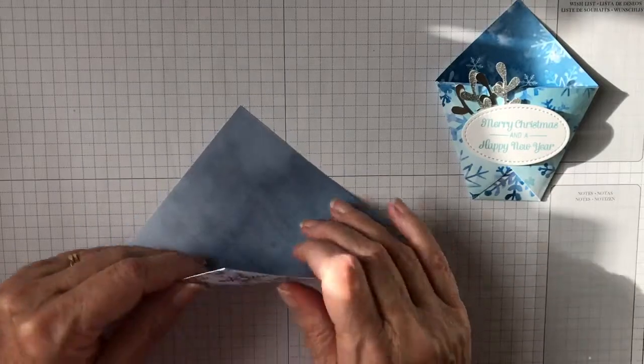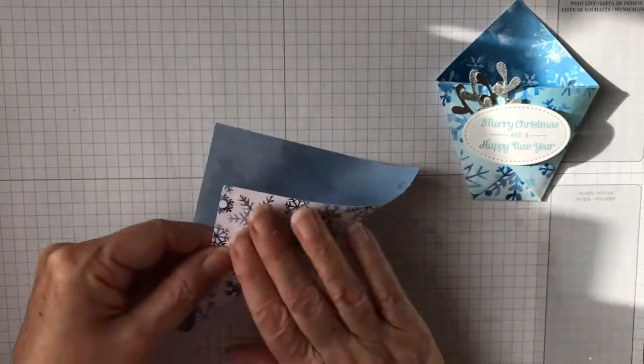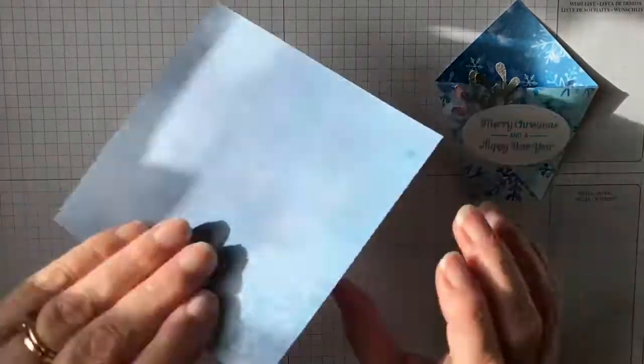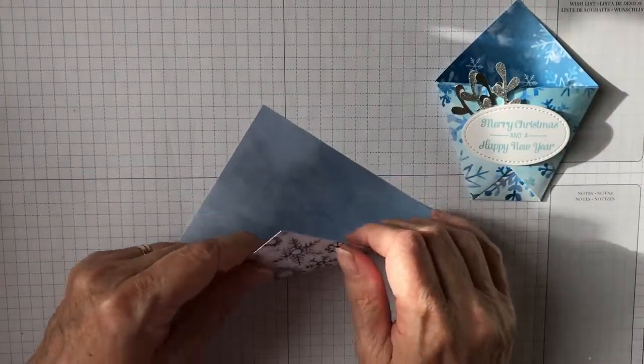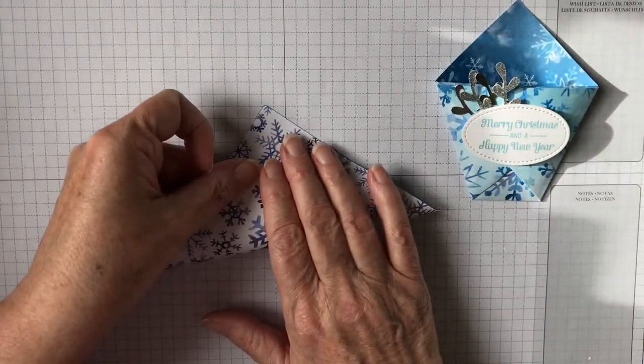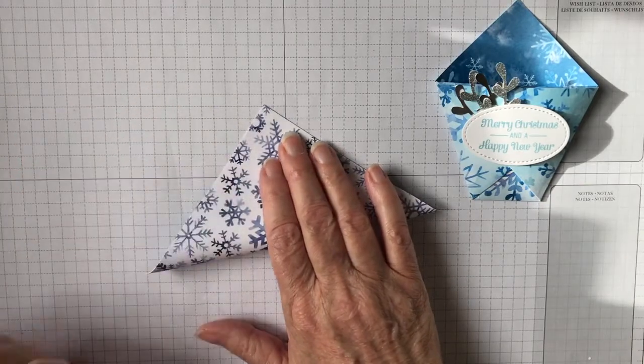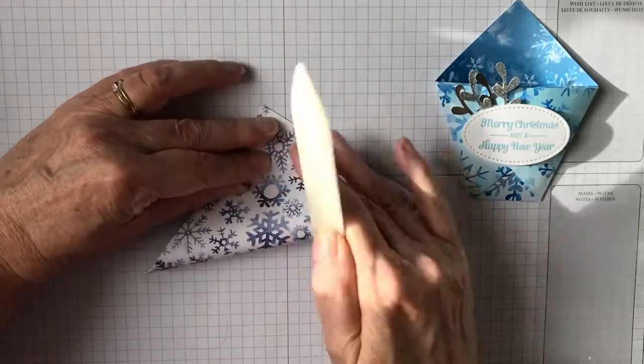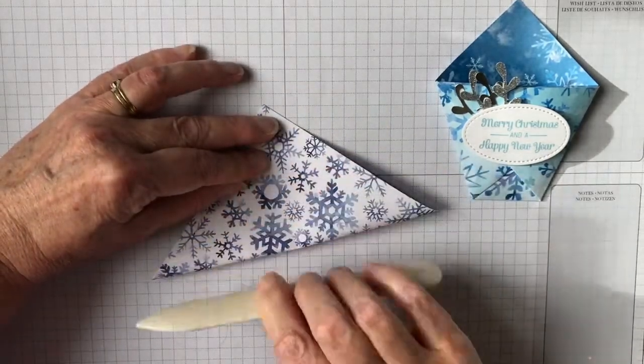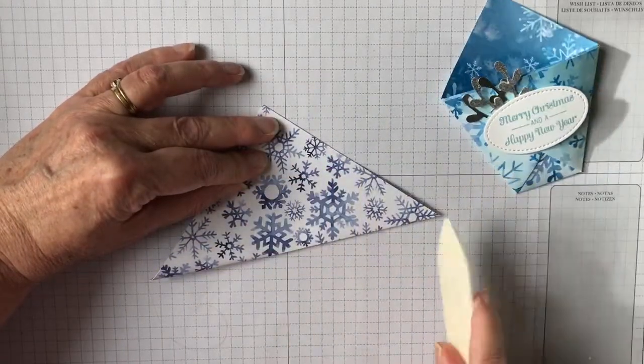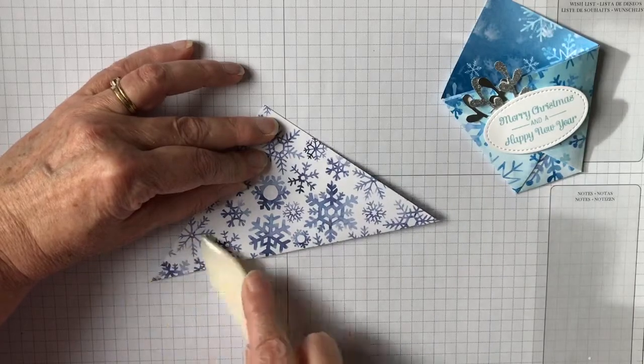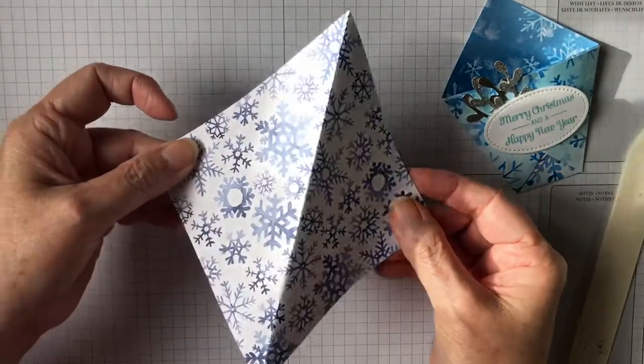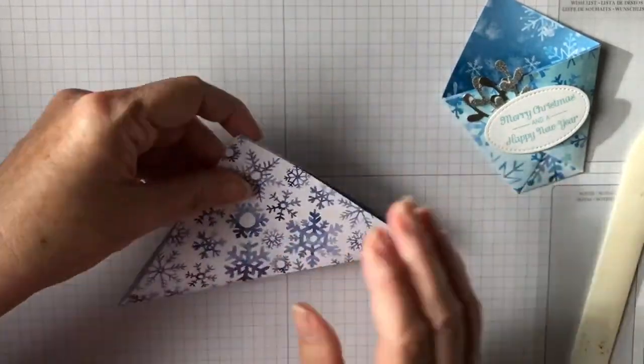So all you do is start with a square of paper. Whichever side you want as your outside should be underneath at this point. Bring one corner across to the other corner, take your bone folder, and fold that. So you've now got a diagonal fold to show you where the fold goes.